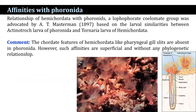Regarding the relationship of Hemichordata with Phoronida — a lophophorate coelomate group — Masterman (1897) proposed this relationship based on larval similarities between the actinotroch larva of Phoronida and the tornaria larva of Hemichordata. However, chordate features of Hemichordata such as pharyngeal gill slits are absent in Phoronida, and such affinities are superficial and without any phylogenetic relationship.